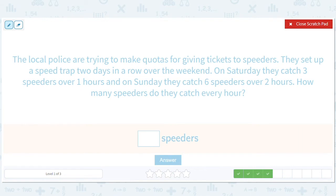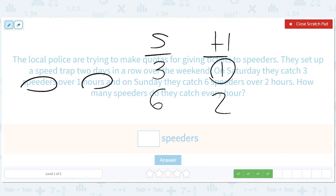So speeders, hours. On Saturday, they catch three speeders over the course of one hour. And on Sunday, they catch six speeders over the course of two hours. How many speeders did they catch per hour? Well, here it's funny because you already see the answer, right? The one is already on the table. But you could have told it's times three anyway. So it's times three. But here we got lucky. So it's just three speeders per hour.